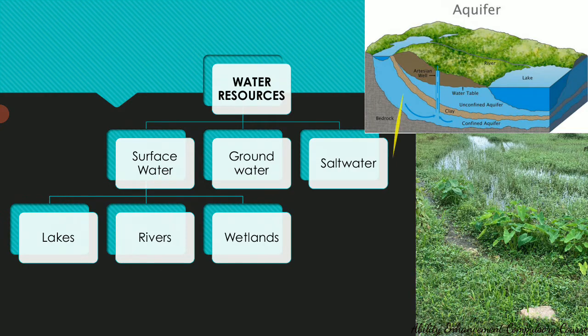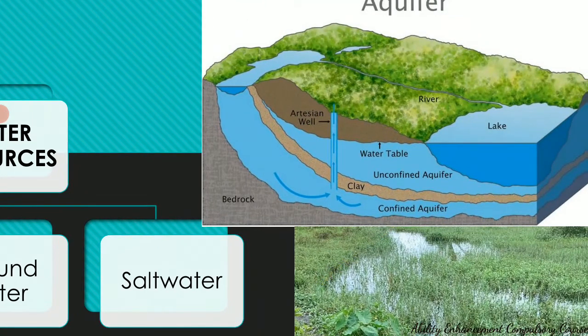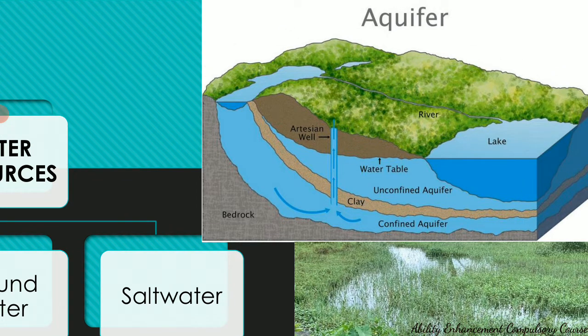The second type is groundwater, which is very important because it is located beneath the earth's surface in the soil, protected by soil and rocks, so not much evaporation occurs. Groundwater along with the body of rock or sediment protecting it is called an aquifer — a body of porous rock or sediment saturated with groundwater. The aquifer can be either a confined aquifer or an unconfined aquifer.